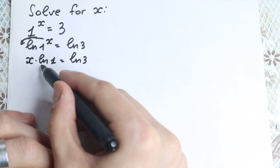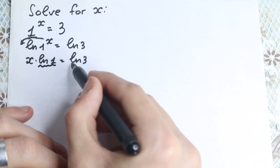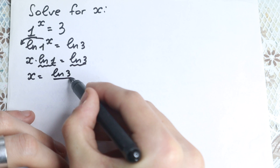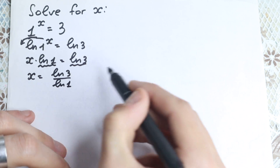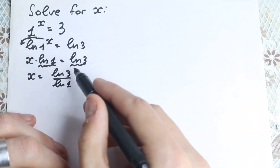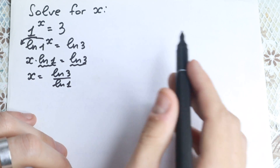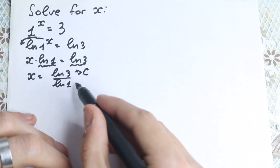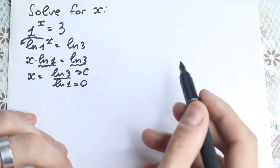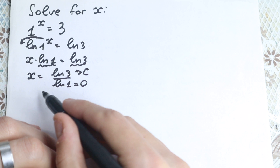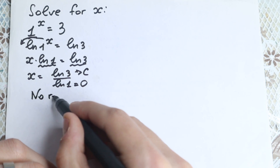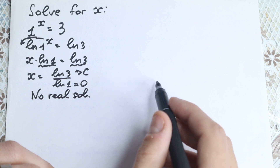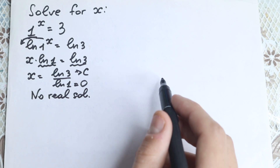Now let's divide both sides by natural log 1, since it's a constant. So x equals natural log 3 over natural log 1. Natural log 3 is some constant, but natural log 1 equals 0 — so we cannot divide by zero. Therefore, there are no real solutions, no real roots.